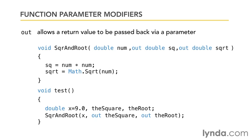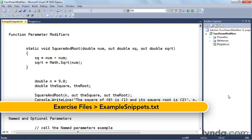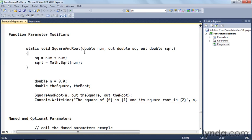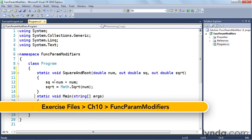Now it's one thing to hear me yammer on about it, let's actually go over to the code and actually watch it work. Okay, so here I am in my func param modifiers project. I've got my snippets open to the code for this example. So first I'm going to copy this function, which is the square and root function, copy that and put it over in my code. Okay, that's the function that we're going to call.